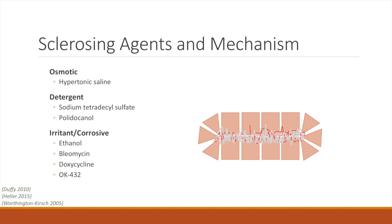Detergent agents cause cell damage by protein denaturation, decreasing cell surface tension, and by interacting with cell surface lipids. Detergent agents can cause damage beyond the intended site compared to osmotic agents. They can also be made into a foam, which allows better contact with the wall of the malformation and increases contact time with the cell wall by displacing blood or fluid, thereby increasing the potency of the sclerosing agent.